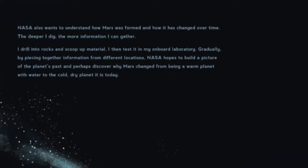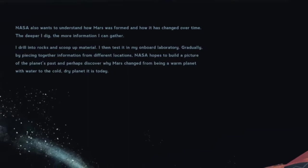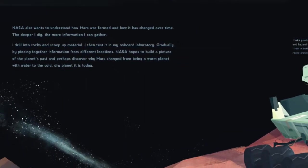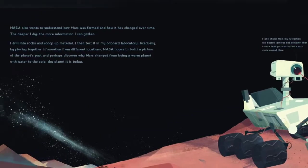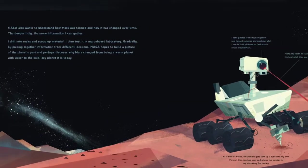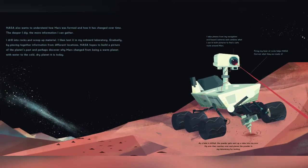NASA also wants to understand how Mars was formed and how it changed over time. The deeper I dig, the more information I can gather. I drill into rocks and scoop up material. Then I test it in my onboard laboratory. Gradually, by piecing together information from different locations, NASA hopes to build a picture of the planet's past and perhaps discover why Mars changed from being a warm planet with water to the cold, dry planet it is today.